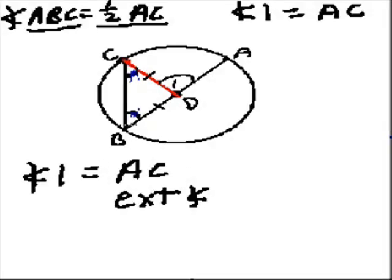As an exterior angle, it's going to equal the sum of the two non-adjacent interior angles B plus C. Here's why: angle one is supplementary to angle D — they're on a straight line. In triangle BDC, angles B, C, and D add up to 180 degrees, so B plus C also supplement angle D. Since both angle one and B+C supplement the same angle D, angle one equals angle B plus angle C.